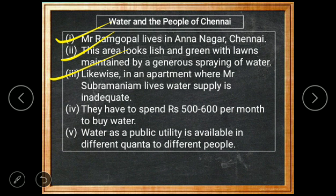On the other hand, where Mr. Subramanian lives, water supply is inadequate. They have to spend five to six hundred rupees per month to buy water. This means that water supply is available in different quantities to different people.